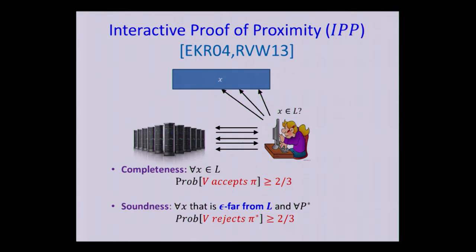More formally, this is the setting that we have. We have our verifier Alice, she wants to check whether a statement of the form X belongs to a language L. She has random access to the input X. She has online interaction with a powerful but untrusted server.